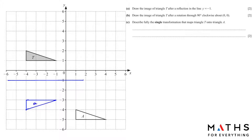The other point is two squares from the mirror line, so we draw it two squares on the other side. Once you get two points you can easily draw it. The third point is here — it's two squares from the mirror line, so we draw the point here. Now we join all the points. Part B: draw the image of triangle T after rotation through 90 degrees clockwise about (0, 0).